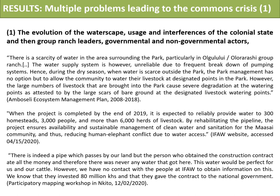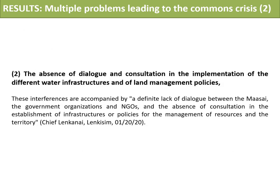However, at the beginning of 2020, and this until today, I quote from a Maasai from the area: 'There is indeed a pipe which passes by our lands, but the person who obtained the construction contract ate all the money. And therefore, there was never any water that got here. This water would be perfect for us and our cattle. However, we have no contact with the people of IFO. To obtain information on this, we know that they invested 80 million KS and that they gave the contract to the national government.' These interferences are accompanied by a definite lack of dialogue between the Maasai, the government, organizations and NGOs, and the absence of consultation in the establishment of infrastructure and policies for the management of resources and land. This also contributes to the formation of inequalities and a deep feeling of injustice experienced by the Maasai, who remain misunderstood.